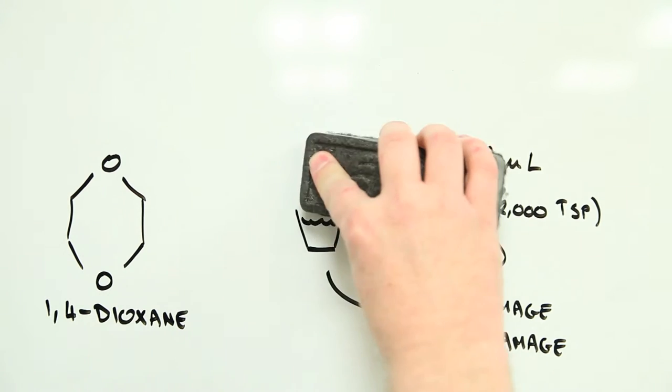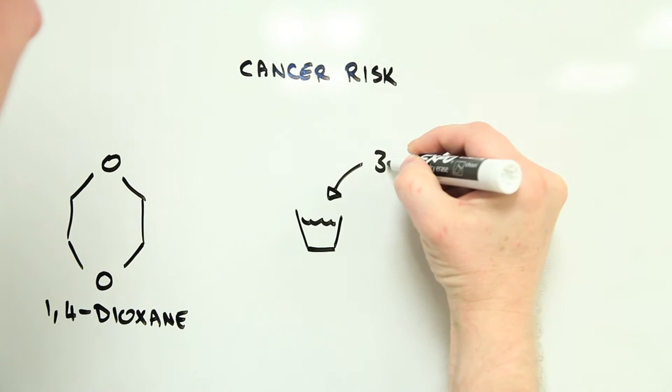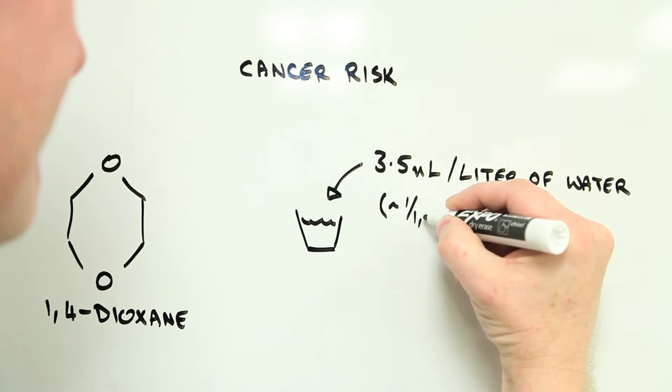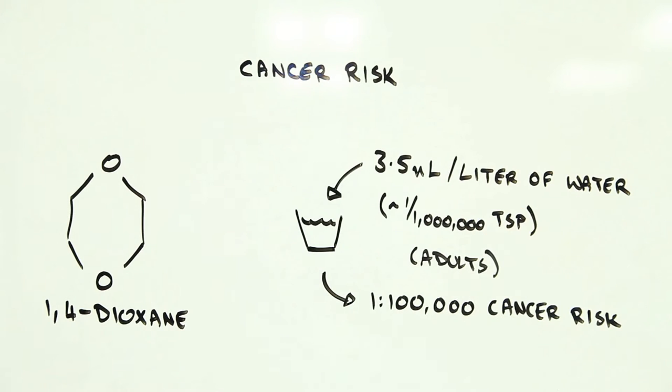When it comes to cancer, things look somewhat different. Based on animal studies, the US EPA estimates that if an adult spends their life drinking water contaminated with just 3.5 micrograms of dioxane for every liter of water, that's less than one millionth of a teaspoon, they have a one in 100,000 chance of developing liver cancer.